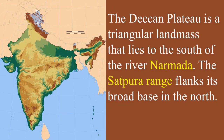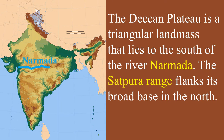The Deccan Plateau is a triangular landmass that lies to the south of the river Narmada. The Satpura Ranges flank the broad base in the north of the Deccan Plateau.